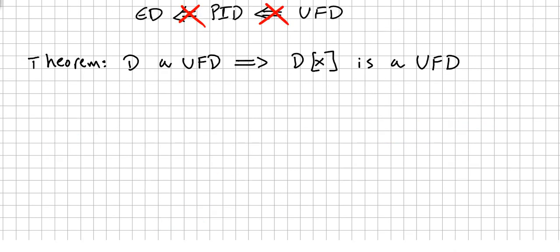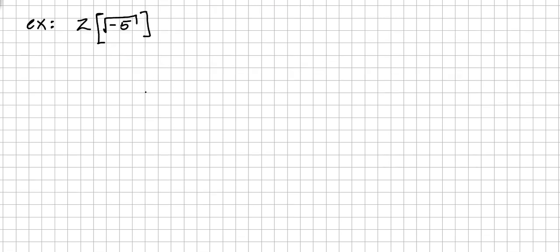Another quick theorem says that if D is a unique factorization domain, then the ring of polynomials over D is also a unique factorization domain. We are now going to see an example of a ring that is an integral domain but is not a unique factorization domain.